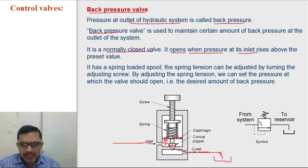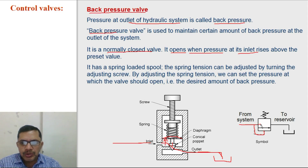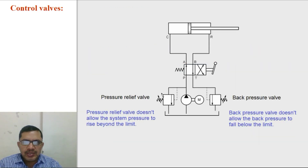Symbolic representation: if the pressure at the inlet is increased, then that pressure acts on the pilot and the arrow will shift to make the connection from inlet to outlet so that oil can flow back to the reservoir.